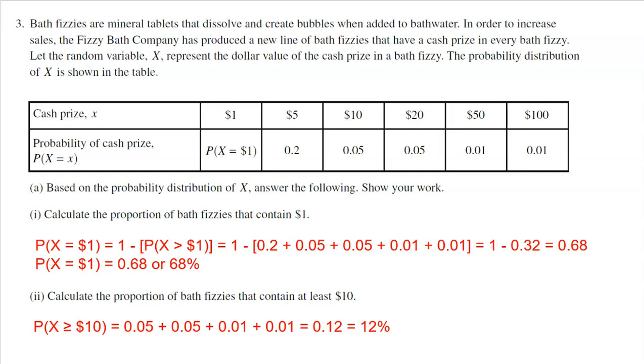So across the top row here, we see the options for how much cash you could win in a bath fizzy: $1, $5, $10, $20, $50, $100. And then we see the probabilities. We see 1% for $100, 1% for $50, 5% for $20, 5% for $10, 2% for $5.